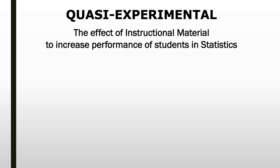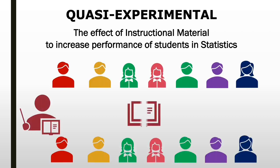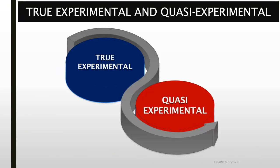Let us take a look at this example. The teacher is interested in determining the effect of instructional material to increase performance of students in statistics. The data will be obtained before and after the experimental treatment. In this scenario, the experimental treatment is the instructional material, and remember, no randomization and no control group. Today, we learned about experimental and quasi-experimental research designs.